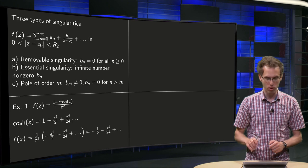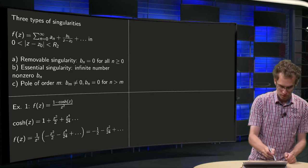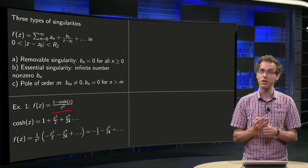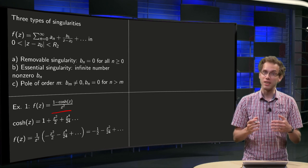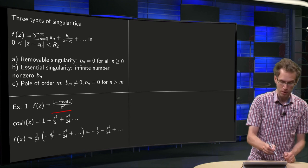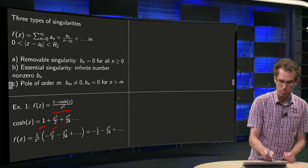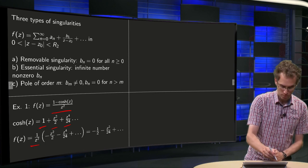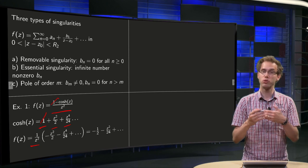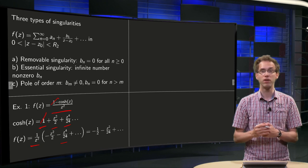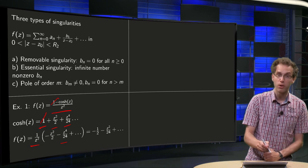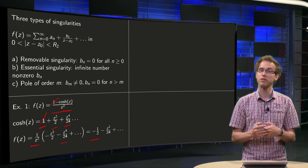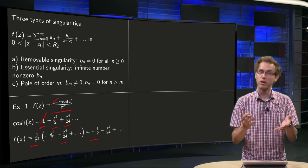Let's look at an example for all of them. Example one, first function: (1 − cosh(z)) / z². We see a problem at z = 0 — division by zero — so there is a singularity there. When we expand the hyperbolic cosine as 1 + z²/2! + z⁴/4! + …, our f(z) becomes (1/z²)(−z²/2 − z⁴/24 − …). The Laurent series starts with −1/2, so there are no negative powers left — the singularity is removed. We have a removable singularity.